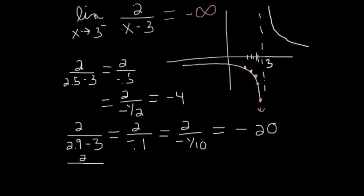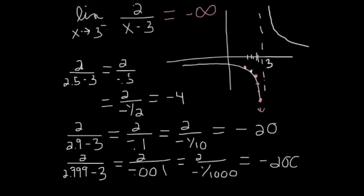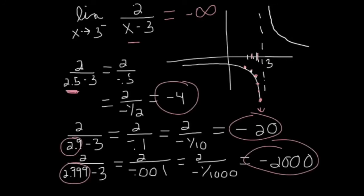What is to the left of 3, but even closer to 3 than 2.9? Let's try 2.999. I get 2,000. As the x values get plugged in, the y values plummet down to negative infinity. So there's two different ways that I'm verifying. One is graphically. And the other, by calculating stuff. Actually plugging in numbers that are approaching 3 from the left. Either way, we get the same answer.